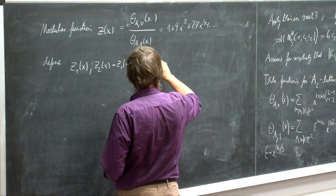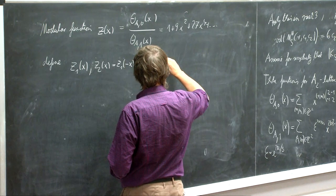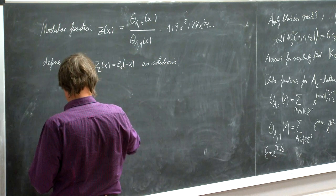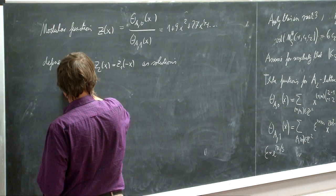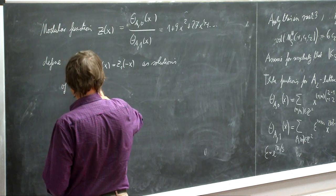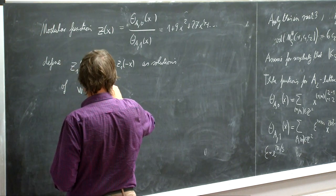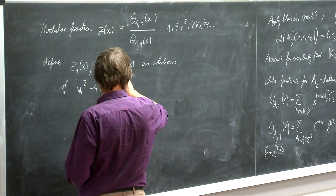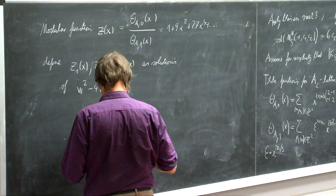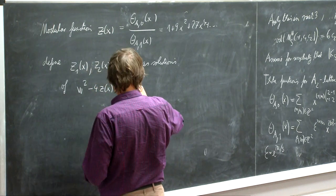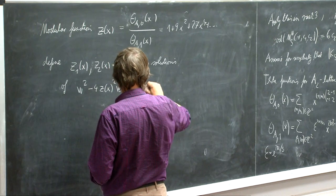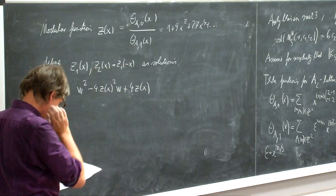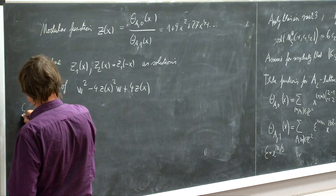And now we're not quite done — so we want to express things in terms of this, but it's not quite enough; we have to solve some algebraic equation. So we define two other modular functions Z1 of X and Z2 of X, which happens to be Z1 of minus X, as solutions of some quadratic equation: W squared minus 4 Z(X) squared W plus 4 Z(X) equals 0.